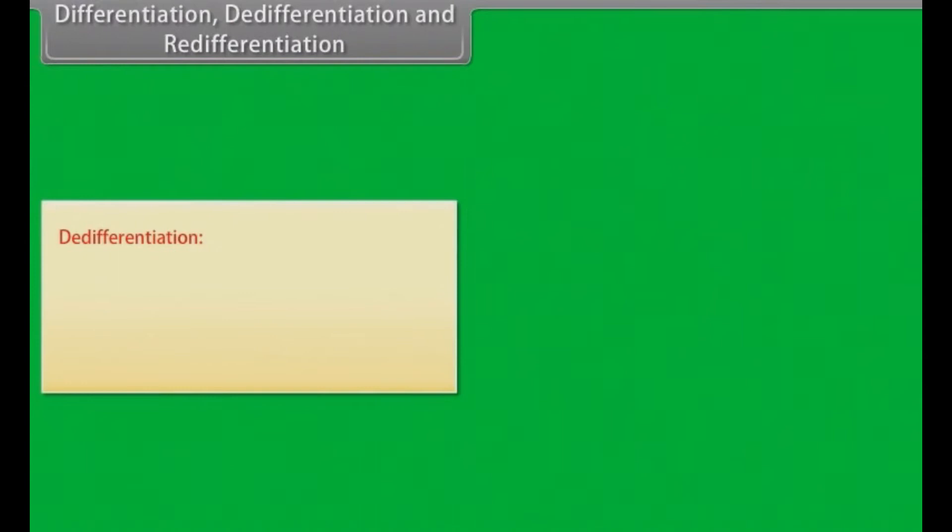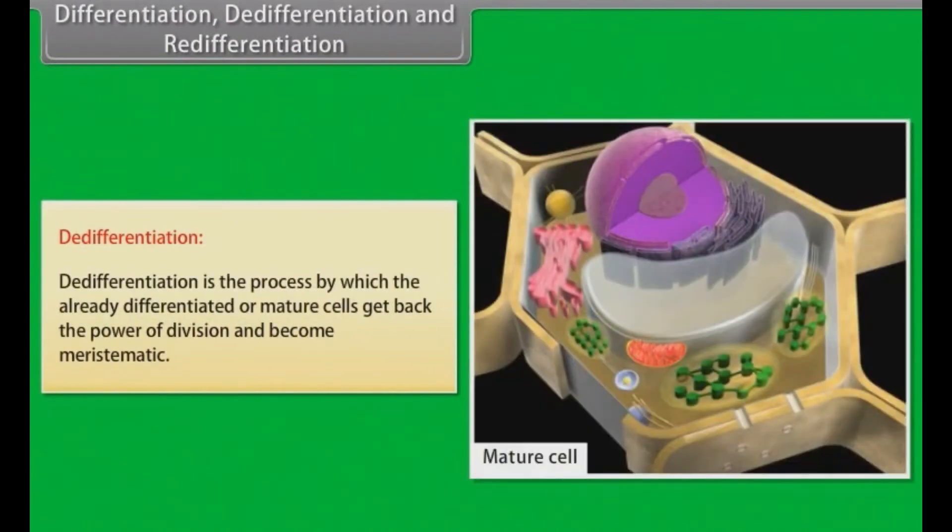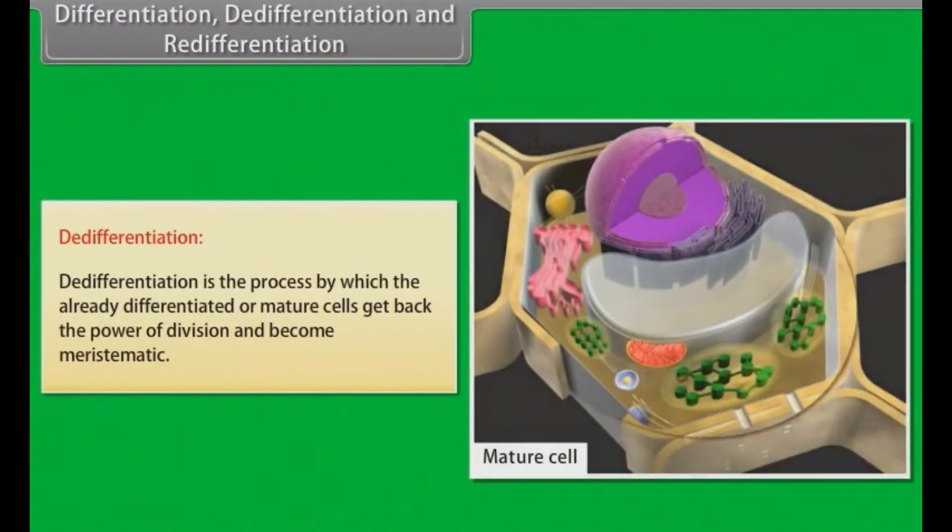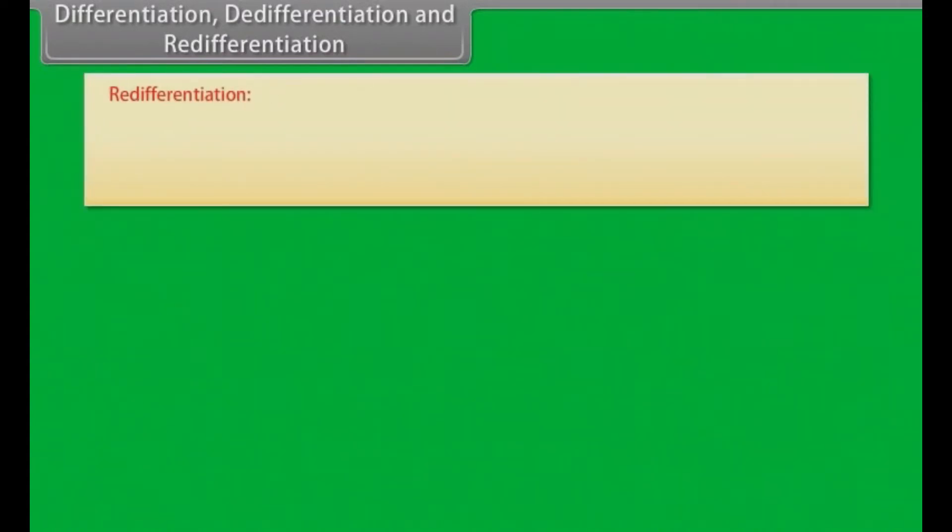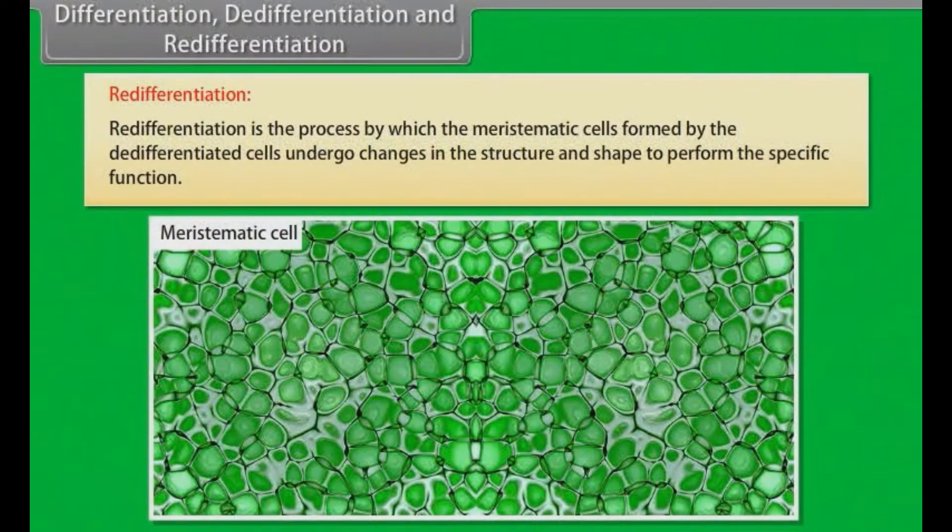De-differentiation: Redifferentiation is the process by which the already differentiated or mature cells get back the power of division and become meristematic. Redifferentiation: Redifferentiation is the process by which the meristematic cells formed by de-differentiated cells undergo changes in the structure and shape to perform the specific function.